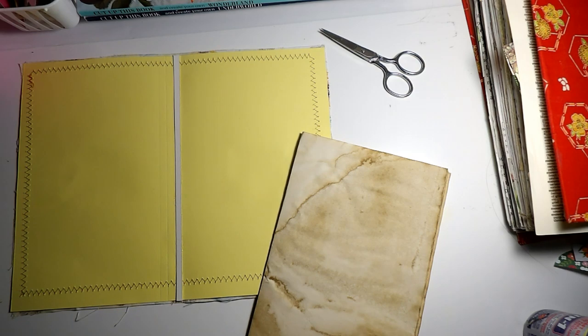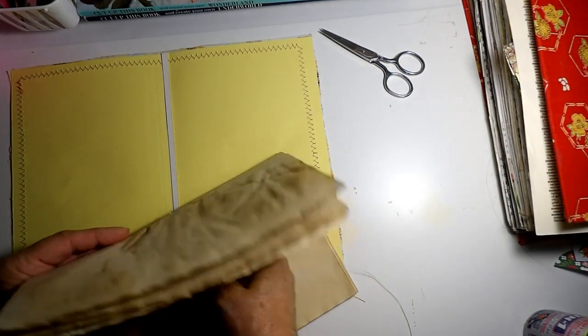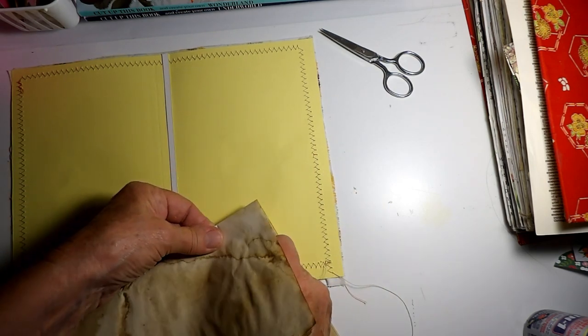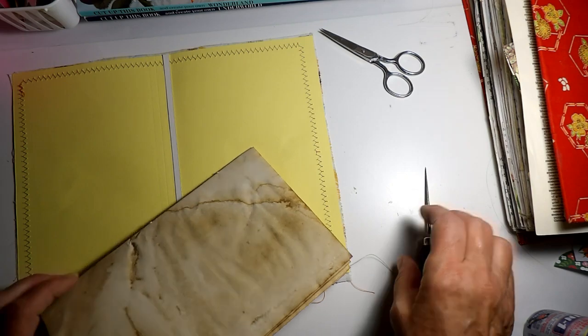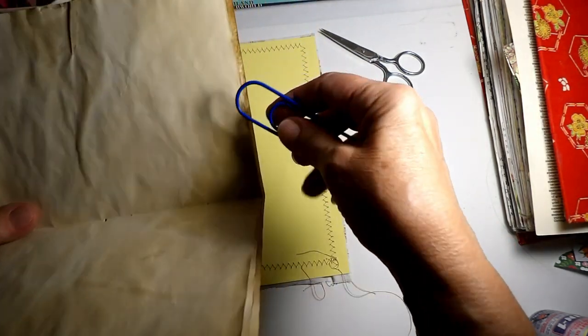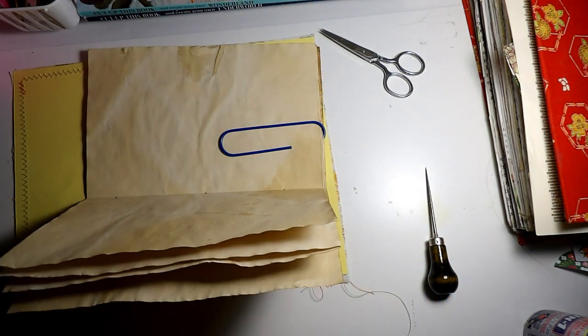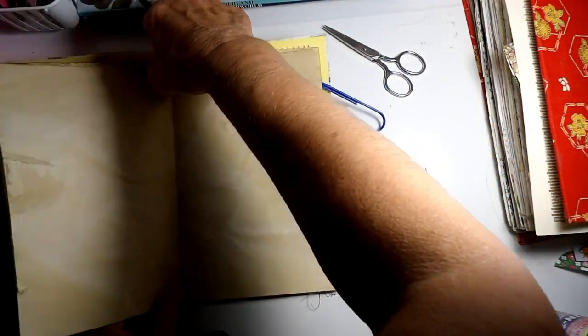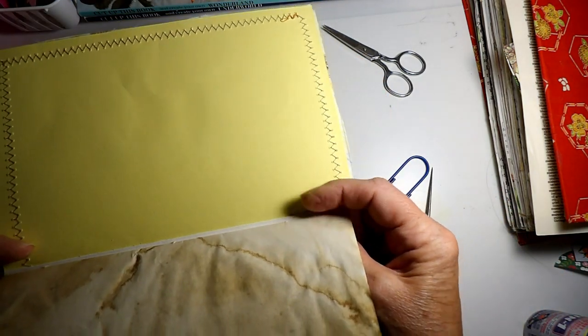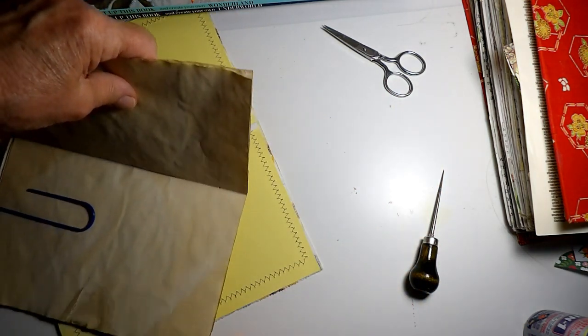I'm just going to guesstimate. I'm not measuring where my holes are going to be or anything like that. I don't think it's necessary. I'm going to poke them out, mark them out. I think it's better to do it like this separately because my spine is so tiny. I want to make sure I'm getting it on the spine.